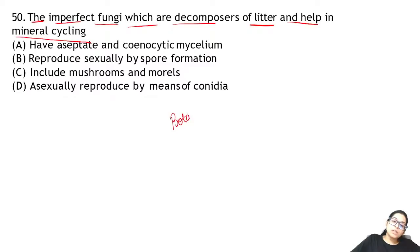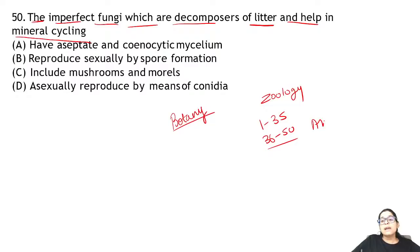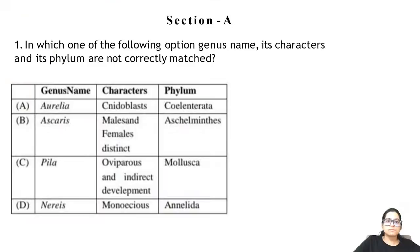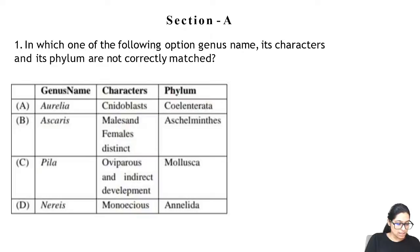Now we will start zoology. In zoology, questions 1 to 35 — you will attempt all of them. Questions 36 to 50 — attempt any 10. After this we will calculate total marks and see how many out of 360 you will get.